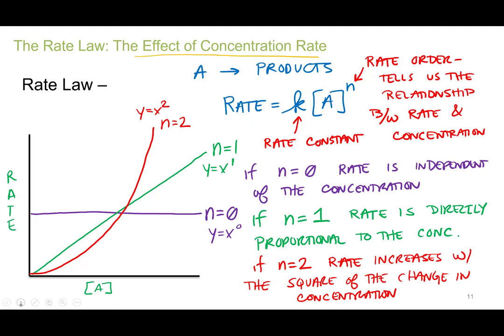We already talked about activation energy and how that impacts rate — the higher the activation energy, the slower the rate, because a smaller percentage of molecules have enough kinetic energy to overcome that activation barrier. We also talked about temperature and how it's proportional to rate. Now we're talking about concentration, which in a nutshell should be straightforward: if you add more reactants they're going to collide more often, so there should be a directly proportional relationship.